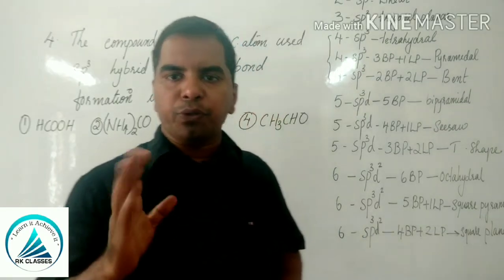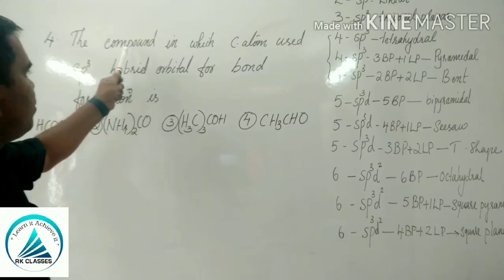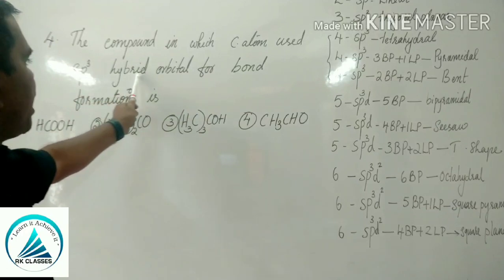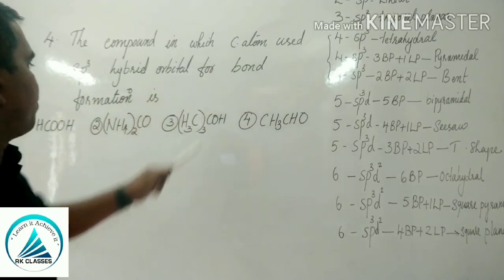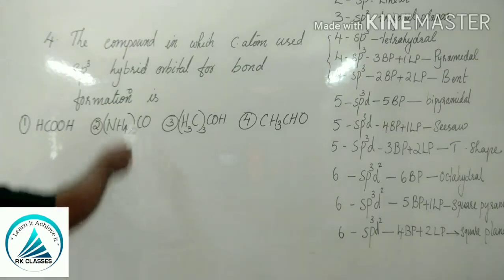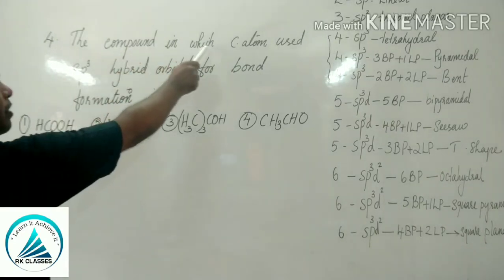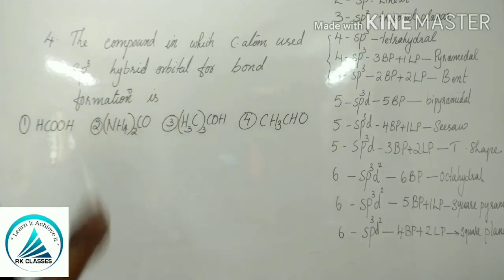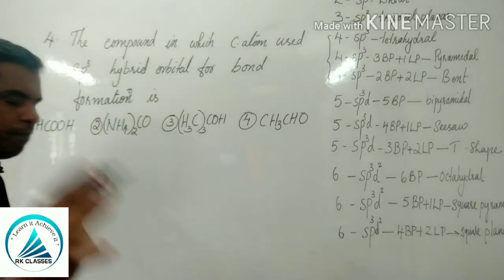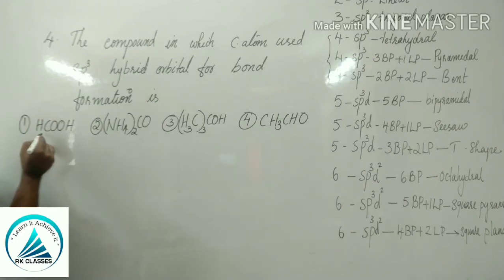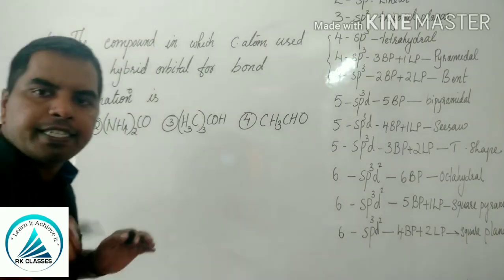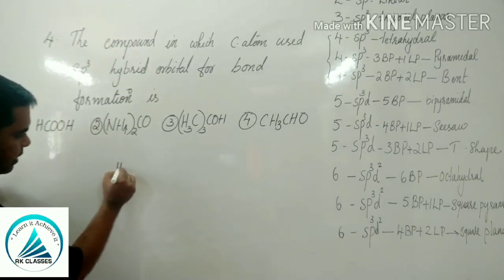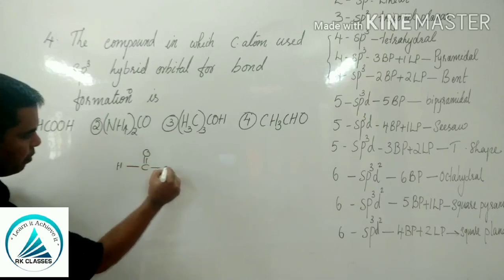Next, the 4th question: which compound has a carbon atom that uses sp3 hybrid orbital for bond formation? We need to find the structure of each compound. The first choice is formic acid, with structure H-C-O-O.